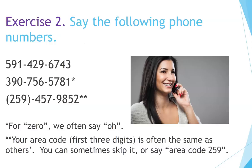Exercise two: say the following phone numbers and prices in English. For zero, we often say 'O.' Your area code — the first three digits — is often the same as others. You can sometimes skip it or say 'area code 259.'